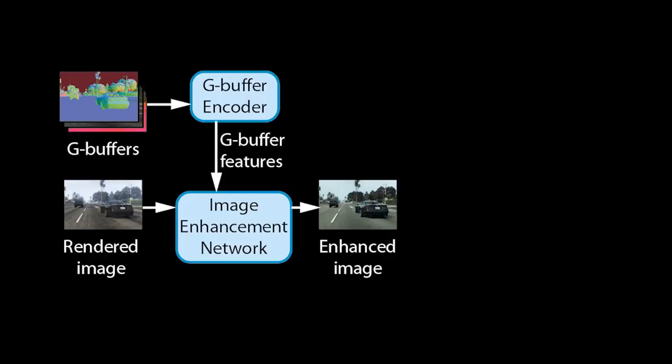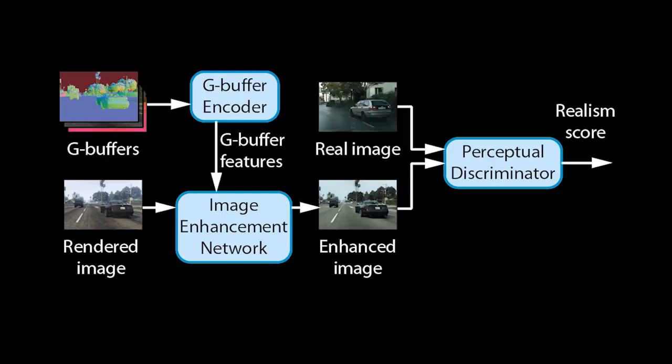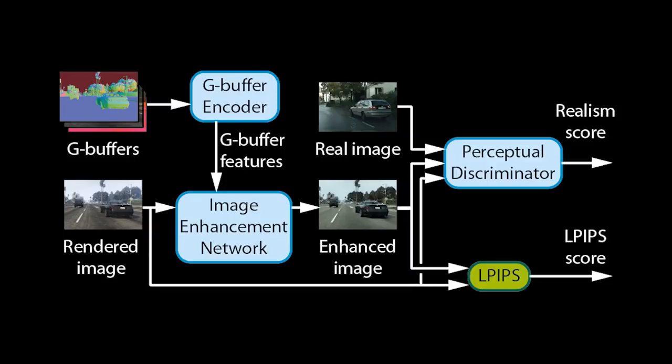To train our networks for enhancing realism, we employ a perceptual discriminator. For each image it takes in, it produces a realism score. To make it understand what the real world looks like, we also feed it real photos. To ensure that our networks retain the structure of rendered images, we further add them to the discriminator inputs and employ a perceptual loss.